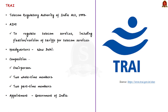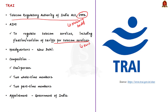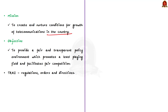The entry of private service providers in the telecom industry brought an inevitable need for independent regulation. Thus TRAI was established in 1997 by an Act of Parliament called the Telecom Regulatory Authority of India Act 1997 — so TRAI is a statutory body. It aims to regulate telecom services, including fixation or revision of tariffs, which was earlier vested in the central government. The headquarters of TRAI is located in New Delhi.